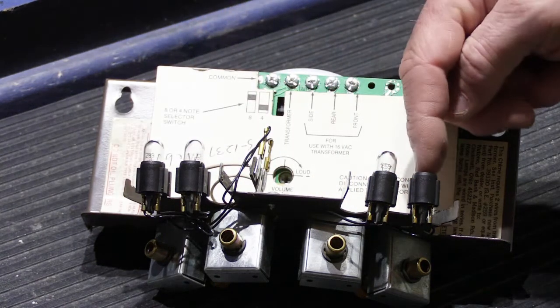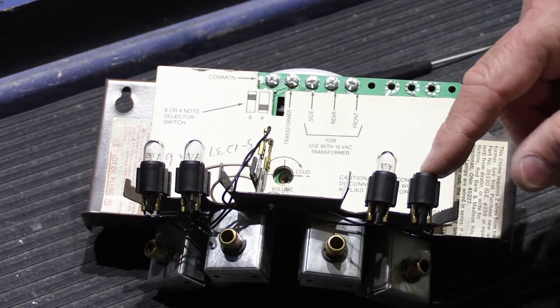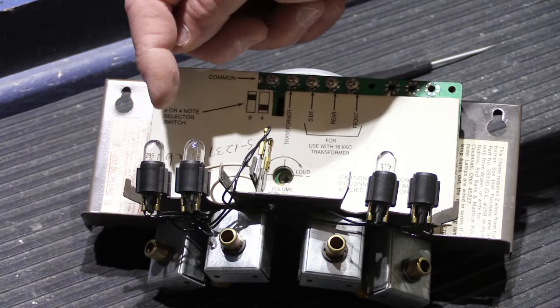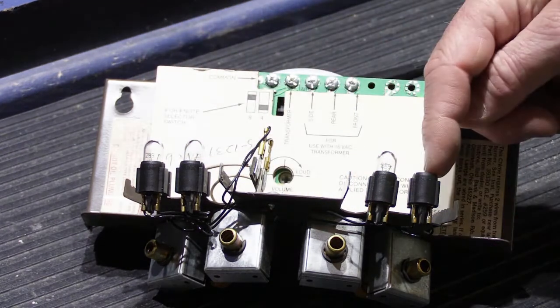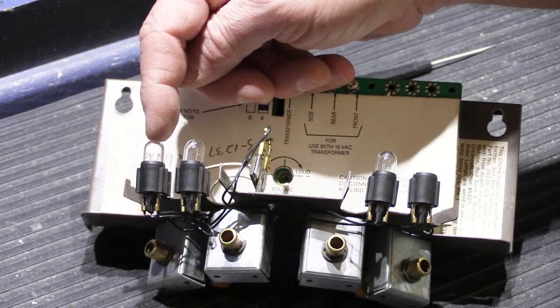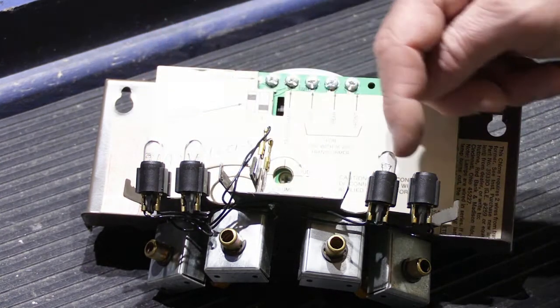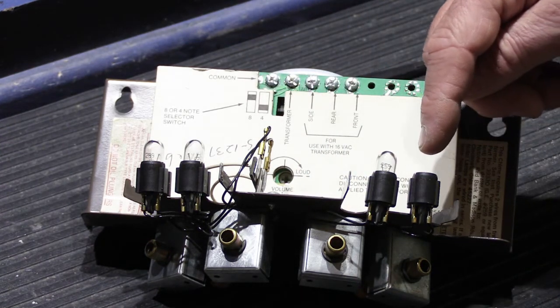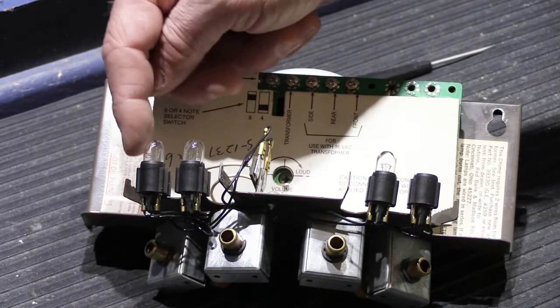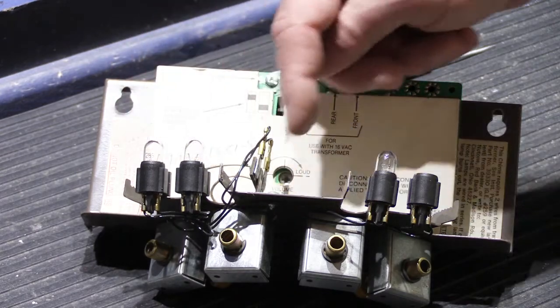These bulbs are all wired in series, and what that means is these are like the old-fashioned Christmas tree lights that we had when I was a kid, where if one bulb goes out or burns out, all bulbs go out along with it. In this case, we have a missing bulb, which means that since this one is missing, nothing will light up. All the bulbs have to be good.